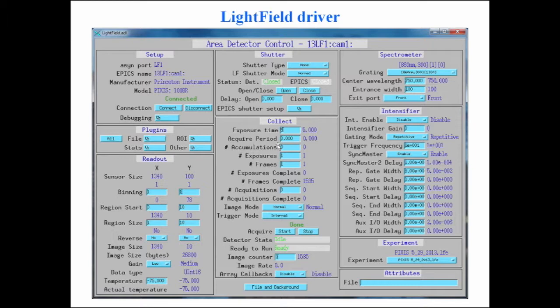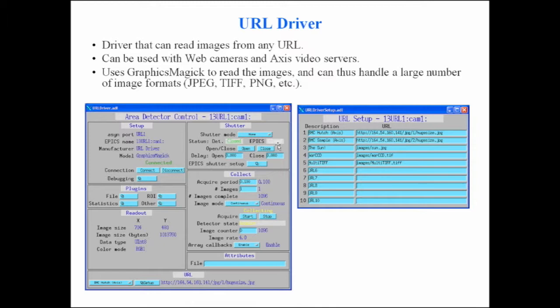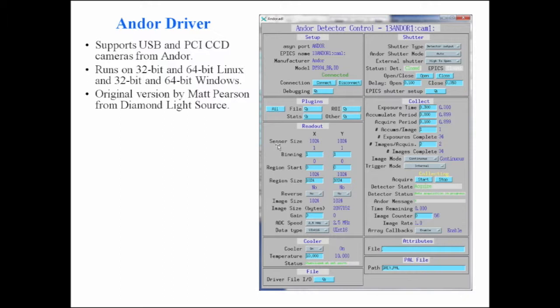For controlling all that timing from EPICS instead of the GUI, this is where you enter all the timing parameters. There's also an example of the URL driver where you can define a bunch of URLs and switch between them conveniently — using access cameras in a hutch, images coming off a Mars CCD camera into a file system, and so on.